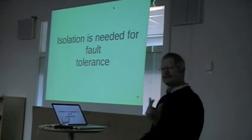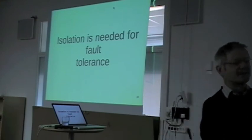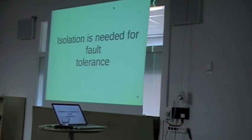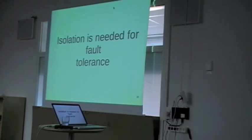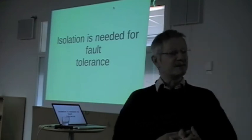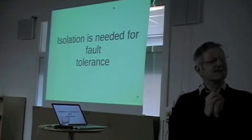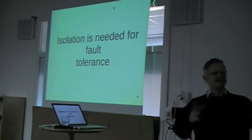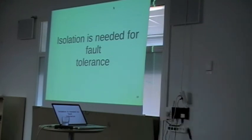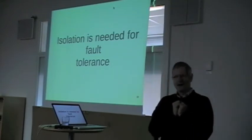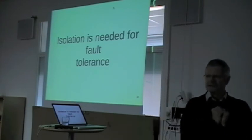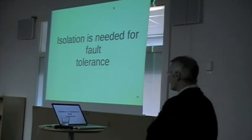If you have one computer and the chance that it crashes is 10 to the minus 3 in a day, and you've got two independent computers, the probability they've both crashed is 10 to the minus 6. If you've got 100 computers, the probability is 10 to the minus 300. So you can make things arbitrarily reliable. Because they haven't made them isolated, they haven't split their computations in such a way that they can tolerate failures. If they do that, it's very simple to make very reliable systems.